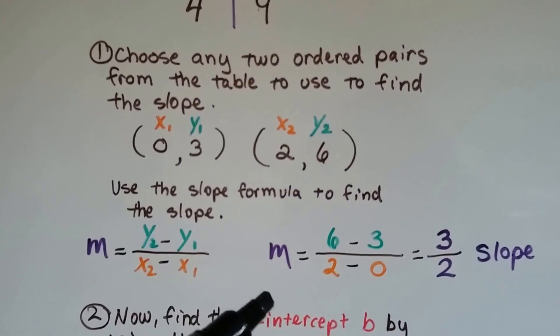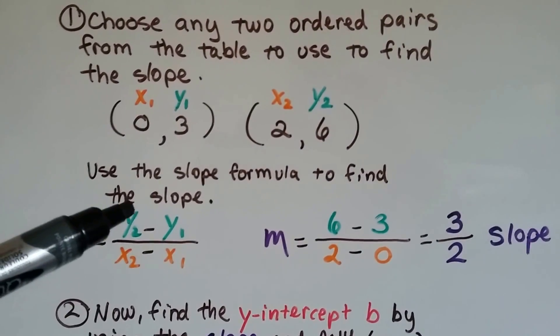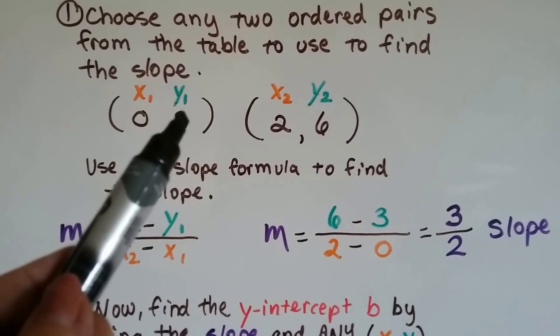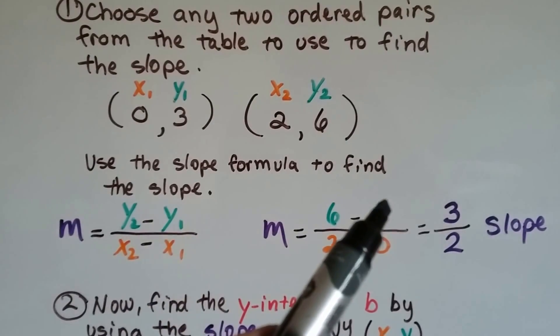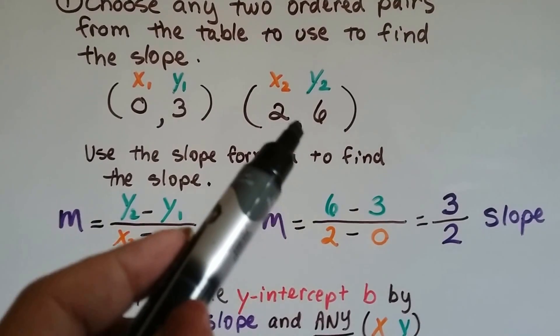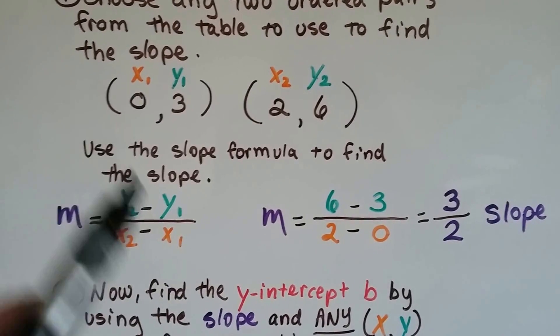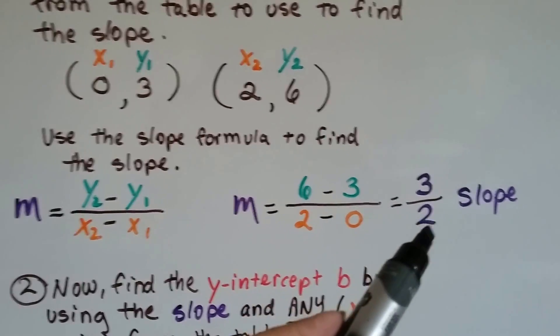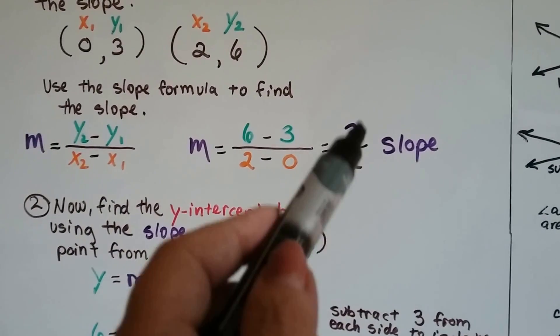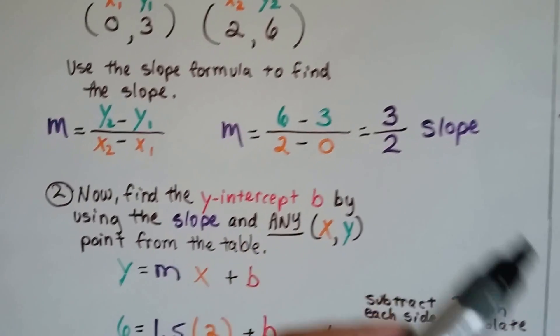So we use the slope formula to find the slope, and we have to have y2 take away y1. So y2 is 6, y1 is 3, so we've got 6 take away 3. That's a 3. Now we have to do x2 take away x1, and that's 2 take away 0. 2 take away 0 is 2. So we know our slope is 3 over 2. And if I simplified that, it would be 1 and a half, right? Or 1.5.